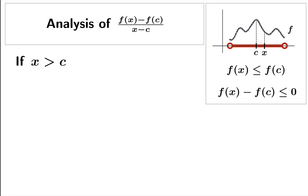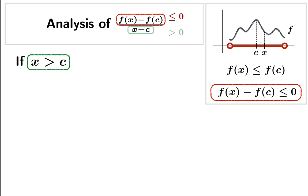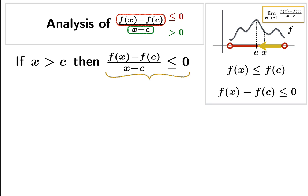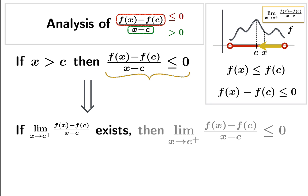Suppose x is greater than c — x is to the right of c. The numerator of our secant slope is less than or equal to zero. Since x is greater than c, x minus c is positive. Dividing something less than or equal to zero by a positive number gives a quantity less than or equal to zero. So the secant slope is less than or equal to zero whenever x is to the right. If we take the limiting value of the secant slope as you approach c from the right, all those secant slopes are less than or equal to zero, so if that right-hand limit exists, it has to be less than or equal to zero.